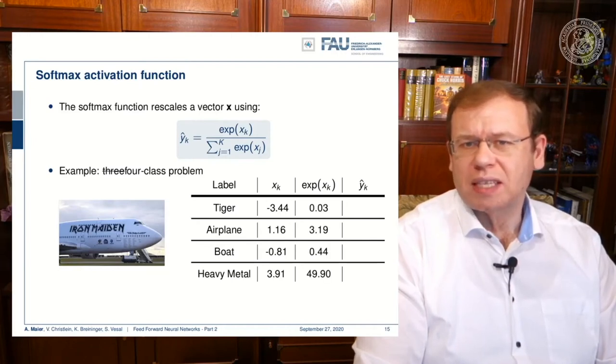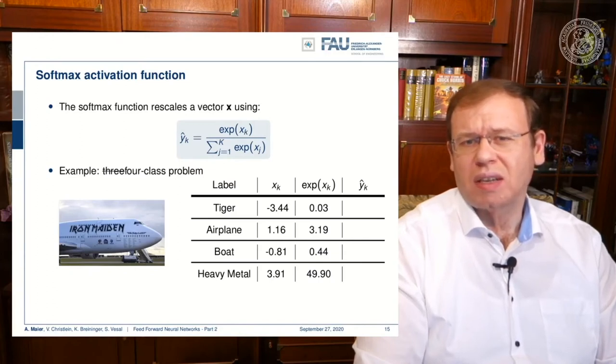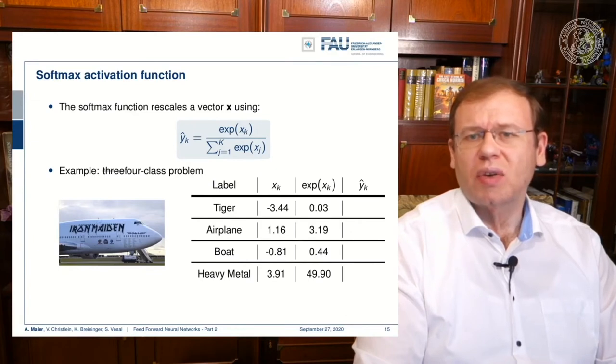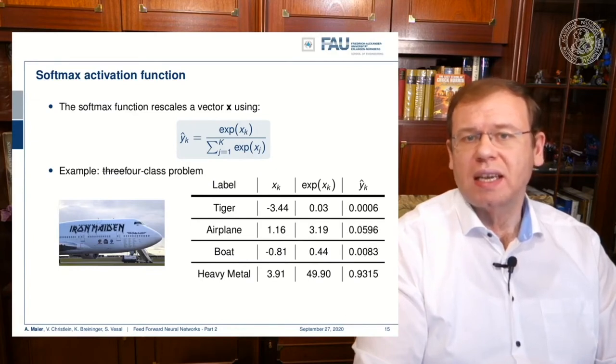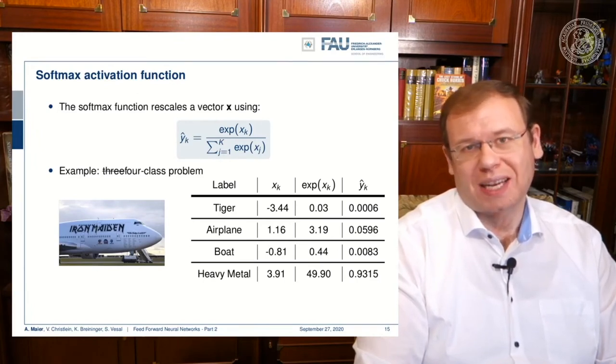Now everything is mapped into positive numbers and there's quite a difference now between the numbers, so we need to rescale them. And now you can see that the highest probability is of course returned for heavy metal in this case.